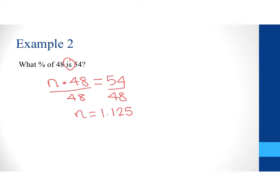And I'm left with n is equal to 1.125. Now, because it does specify that it wants a percentage, that means I have to convert this number back into a percentage. So, I move my decimal two places to the right and I get n equals 112.5%.